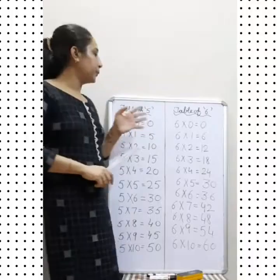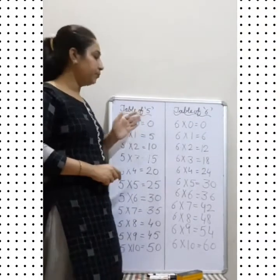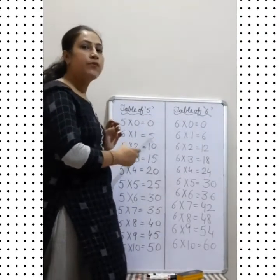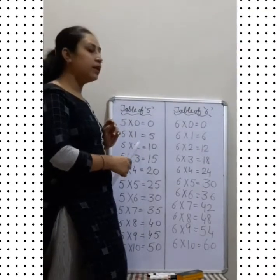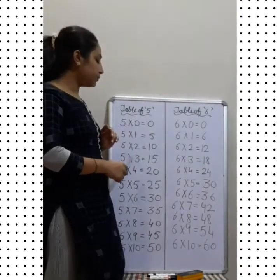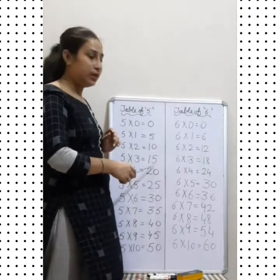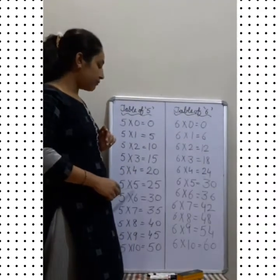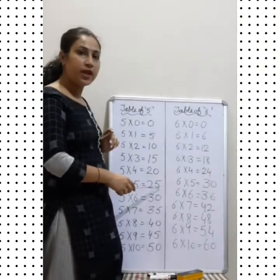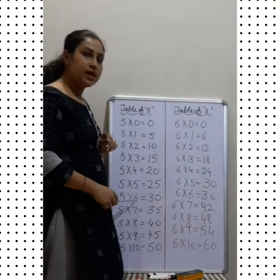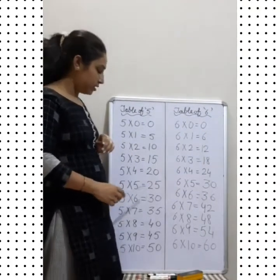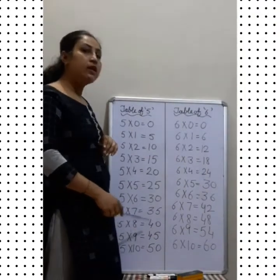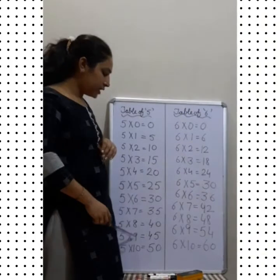Okay. Table of 5: 5 0's are 0, 5 1's are 5, 5 2's are 10, 5 3's are 15, 5 4's are 20, 5 5's are 25, 5 6's are 30, 5 7's are 35, 5 8's are 40, 5 9's are 45.